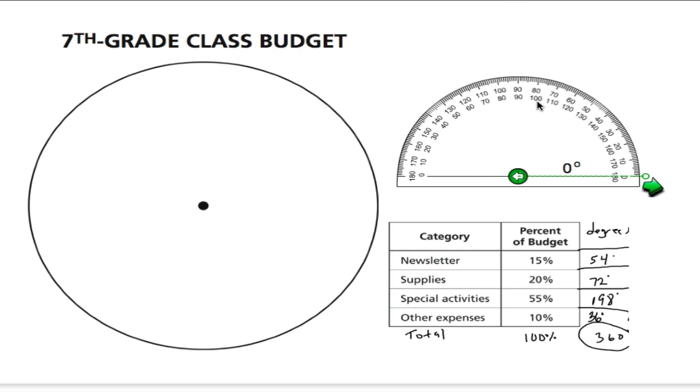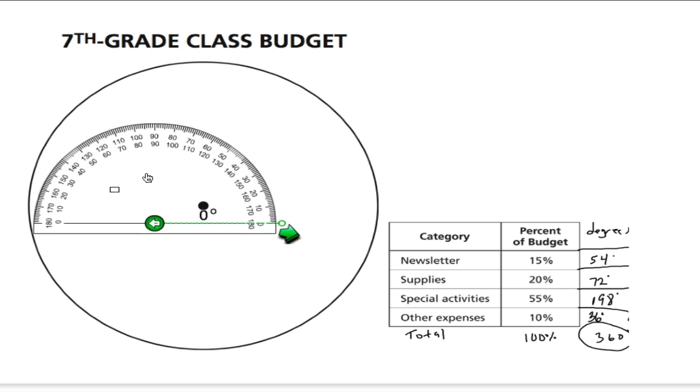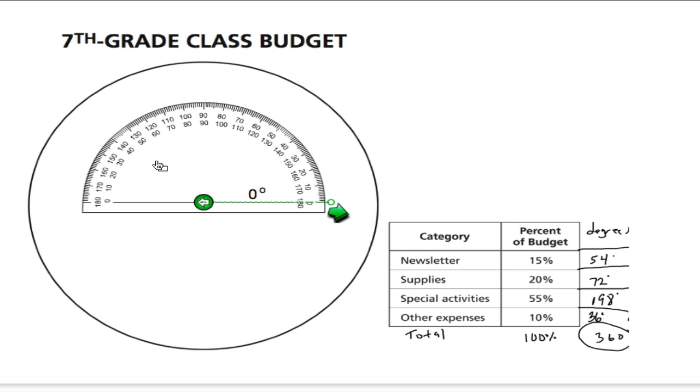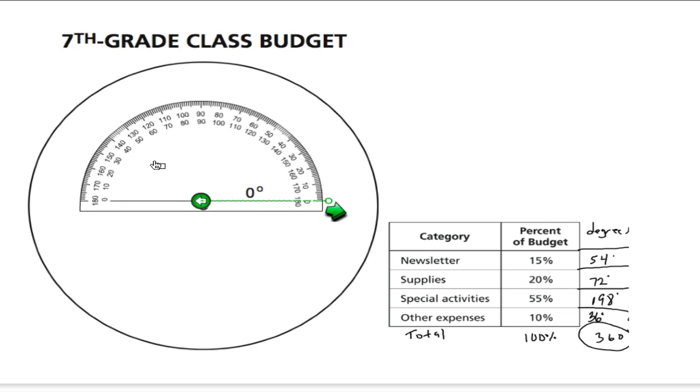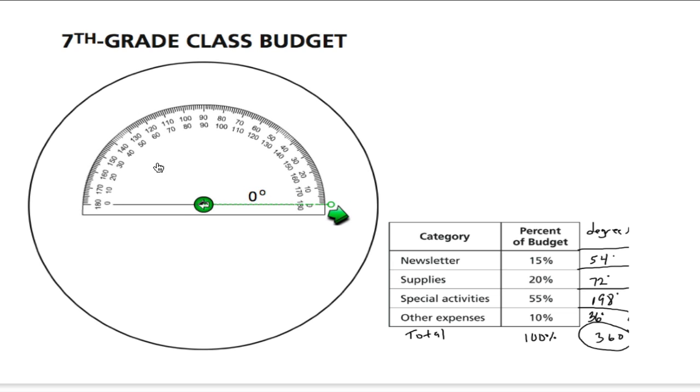Once you have all this information, you want to be able to graph it. And you're given a circle graph and a protractor, and you also have a ruler. So let's use those three tools to graph. Sometimes when you move the protractor over, you'll realize that it's much smaller than the circle. That's not a big deal. All you have to do is mark your angles and then extend the lines with a ruler.